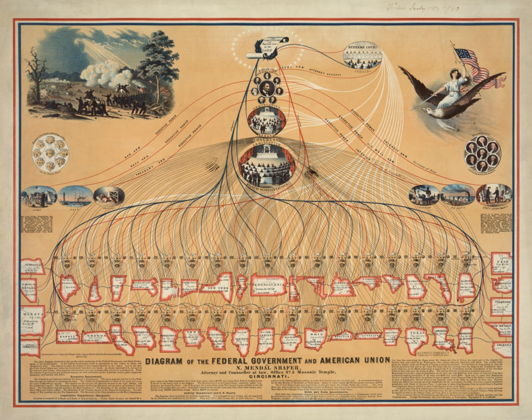There are also independent agencies such as the United States Postal Service, the National Aeronautics and Space Administration, the Central Intelligence Agency, the Environmental Protection Agency, and the United States Agency for International Development. In addition, there are government-owned corporations such as the Federal Deposit Insurance Corporation and the National Railroad Passenger Corporation.